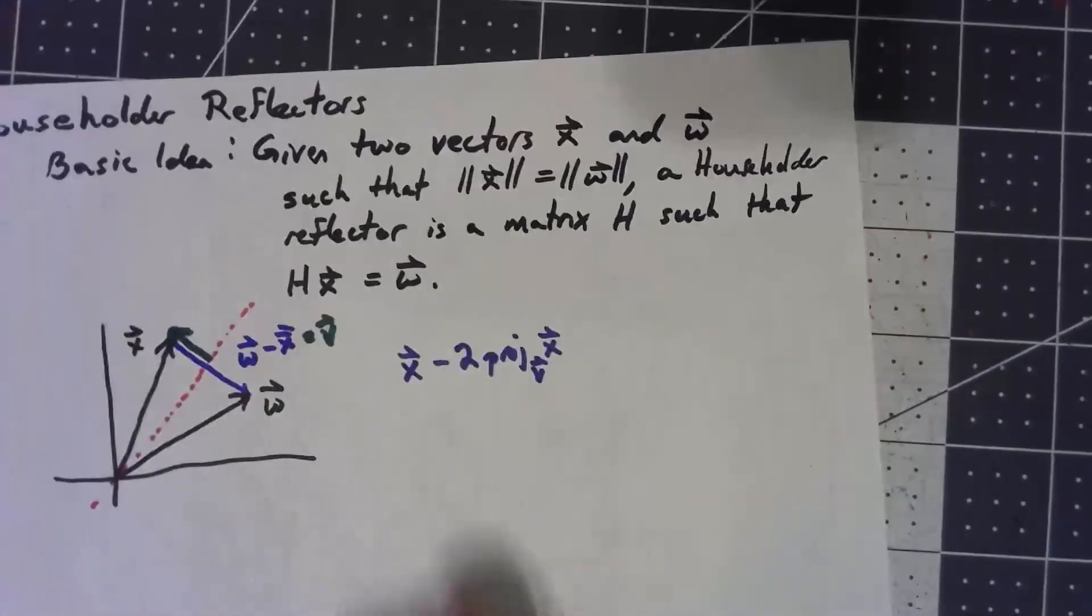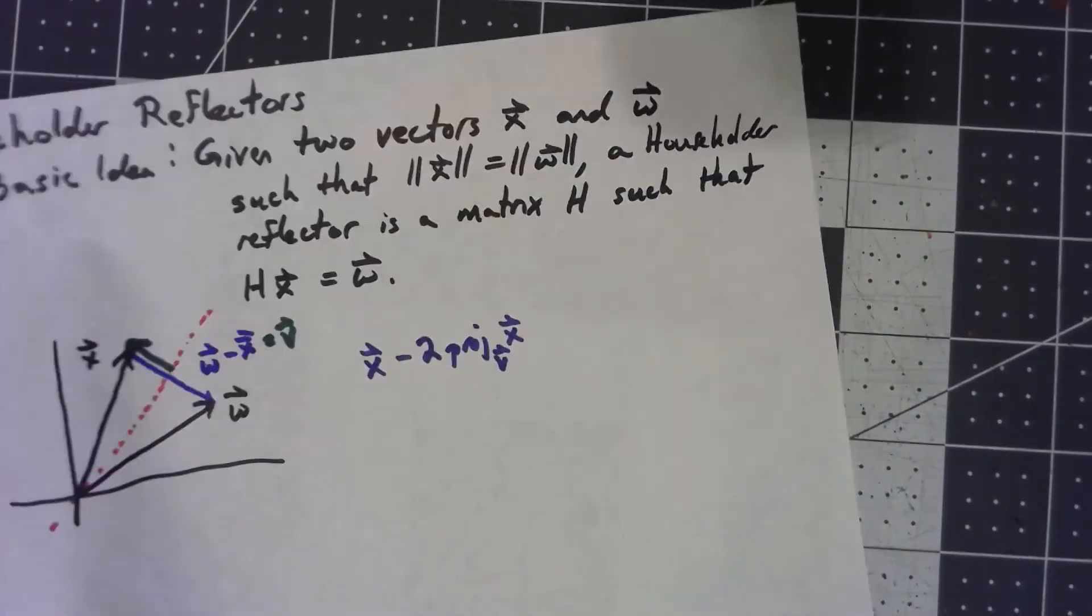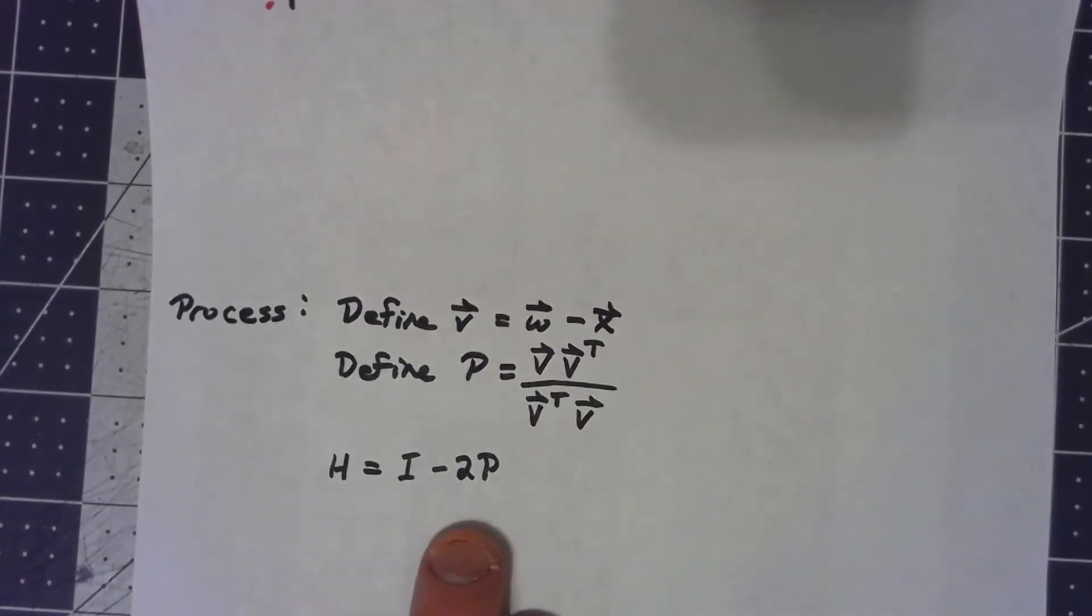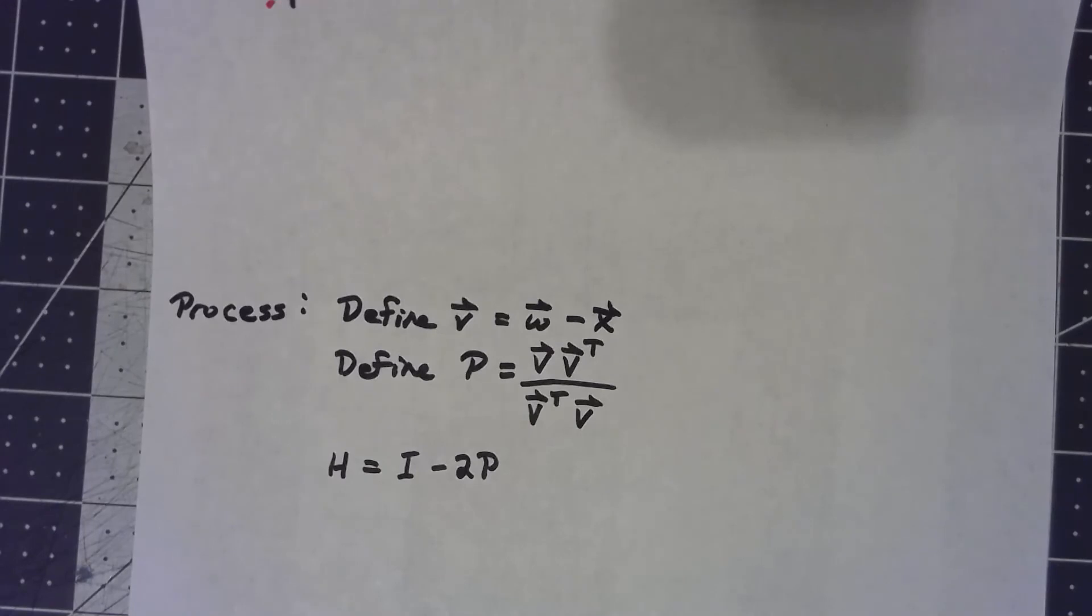And then to do that x minus twice the projection, the matrix that will do that is the identity minus 2P. So the whole way we used this before was to kind of rotate columns of a matrix to get them into an upper triangular form. We're going to use it similarly, but with a slight modification to it, which we'll talk about in the next videos.